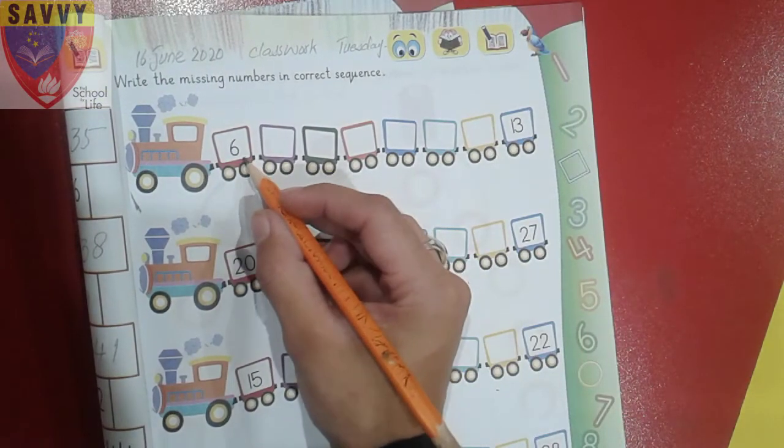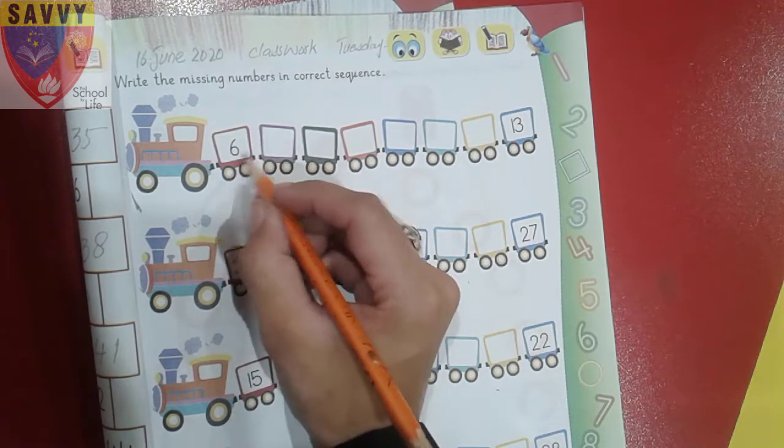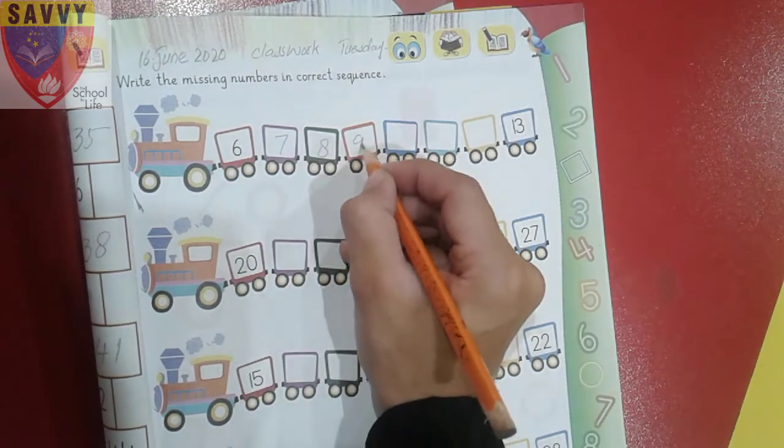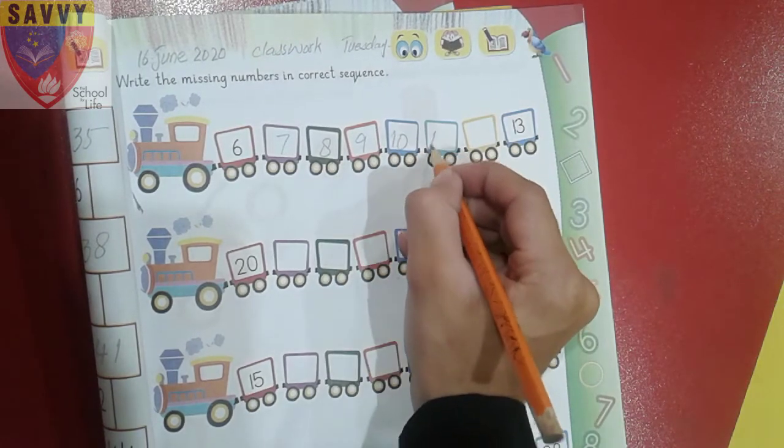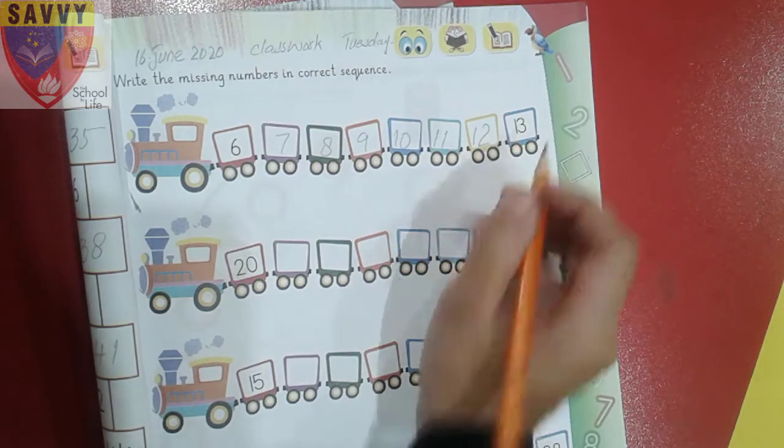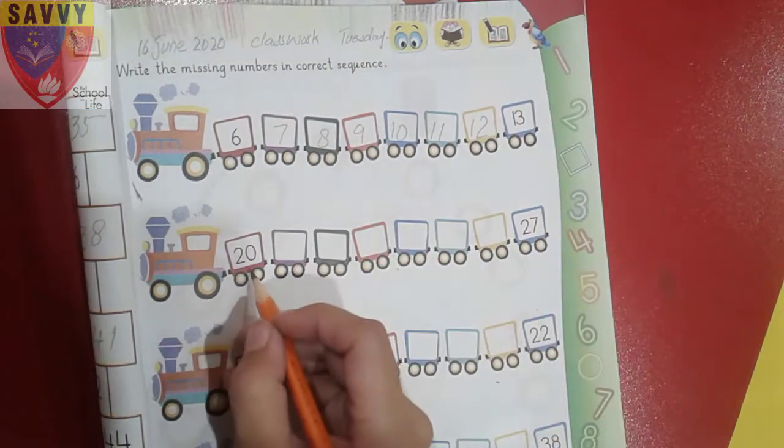We will write the missing numbers in correct sequence. Like six - the number after six is seven, eight, nine, ten, ten and one is eleven, ten and two is twelve, ten and three, thirteen is our last number. Then next part.